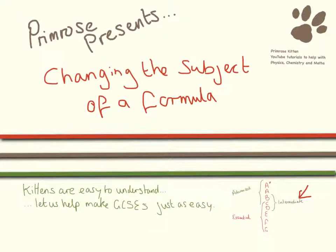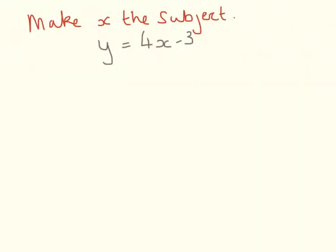Welcome to this video for GCSE Maths where we're going to be looking at changing the subject of the formula. This is for students who are either new to the subject or aiming for a grade between a D and a B. The best way to do this is just to try lots of examples, so I'm going to take you through a number of examples and when you feel ready, pause the video and try to have a go through a few of these yourself.